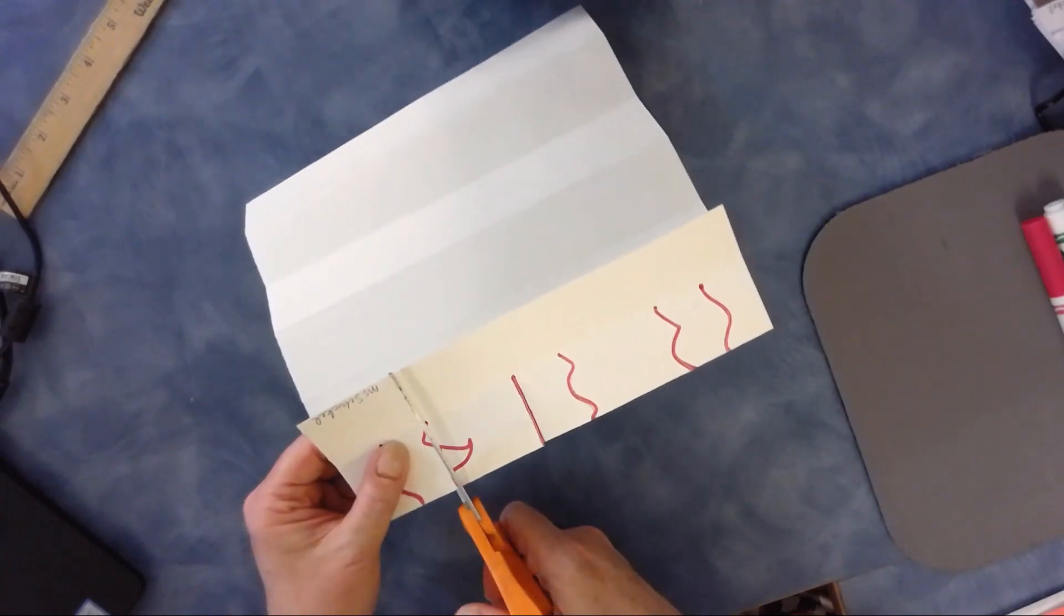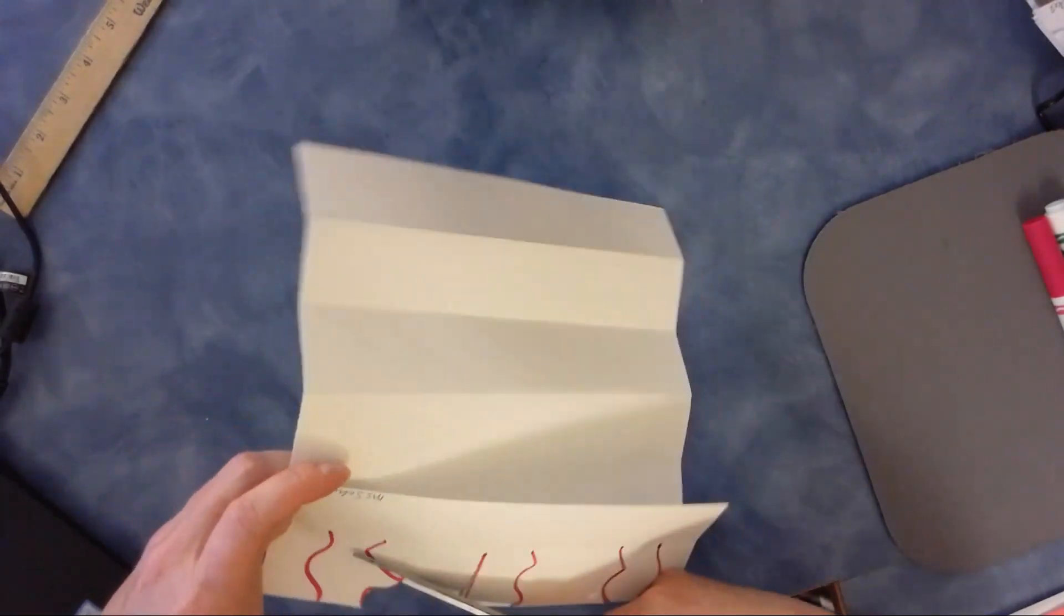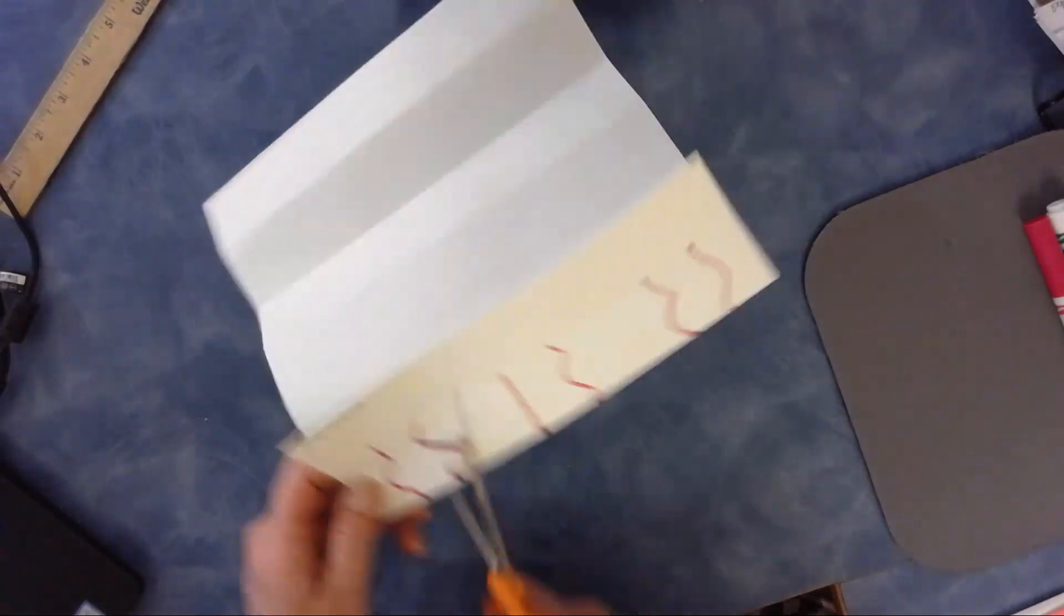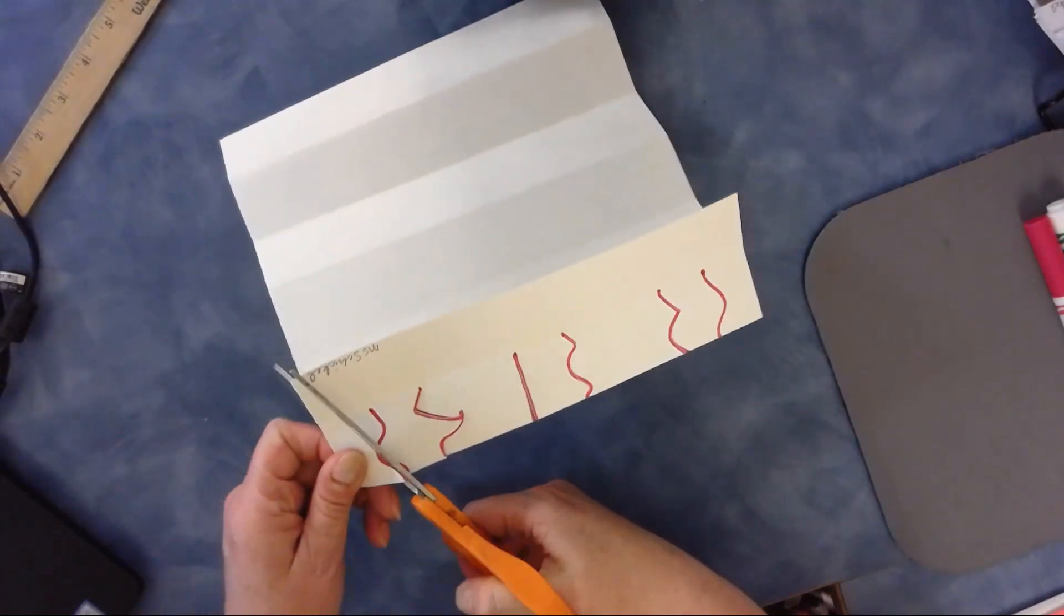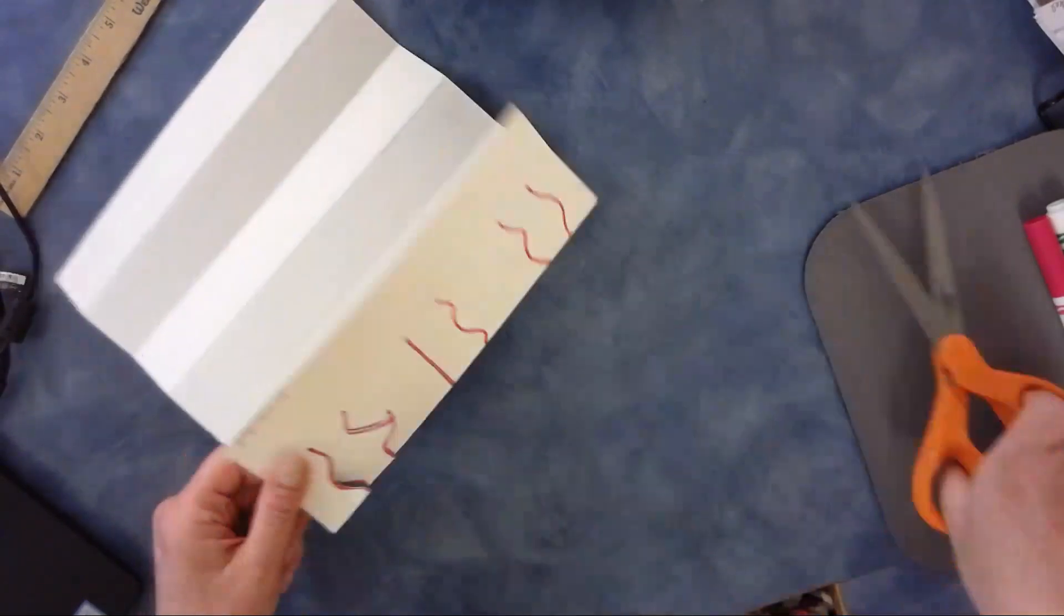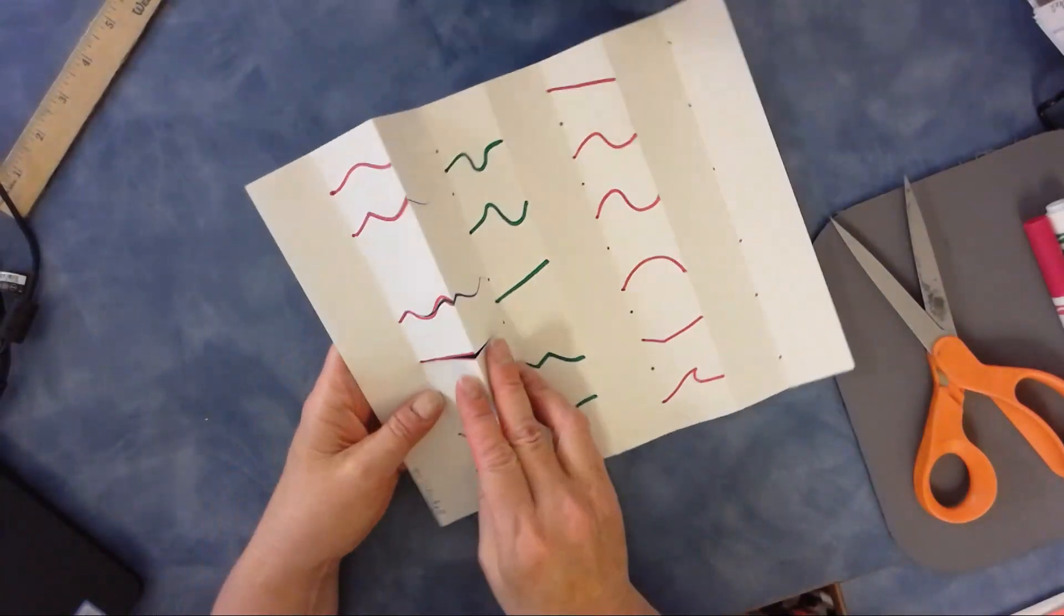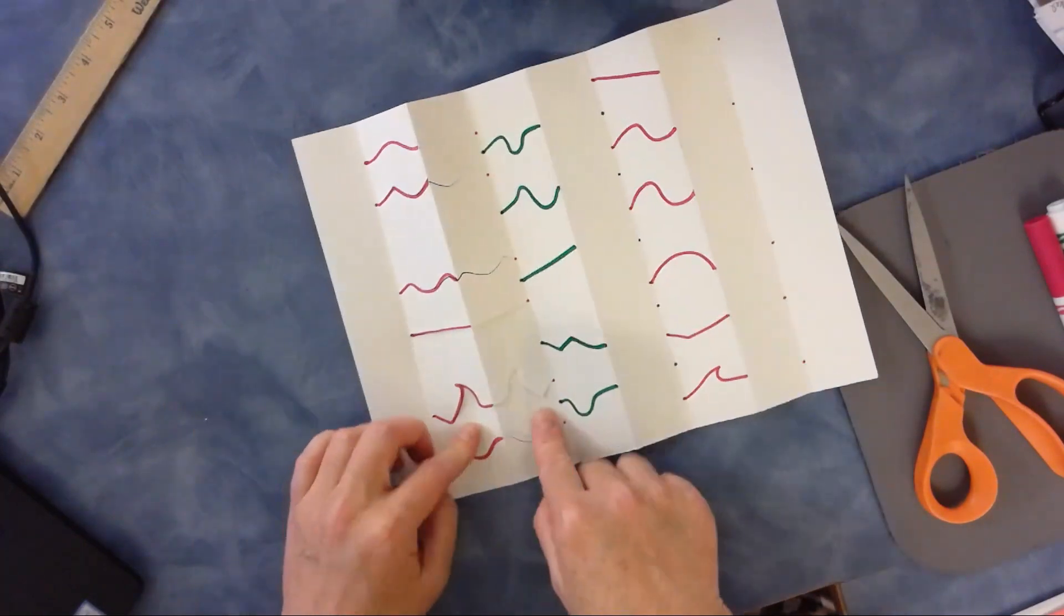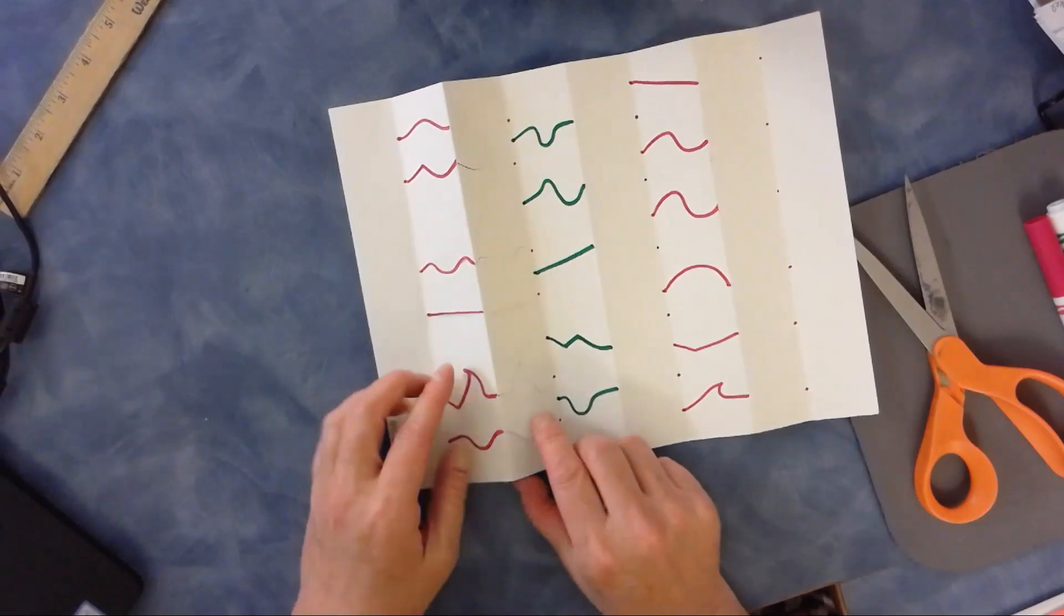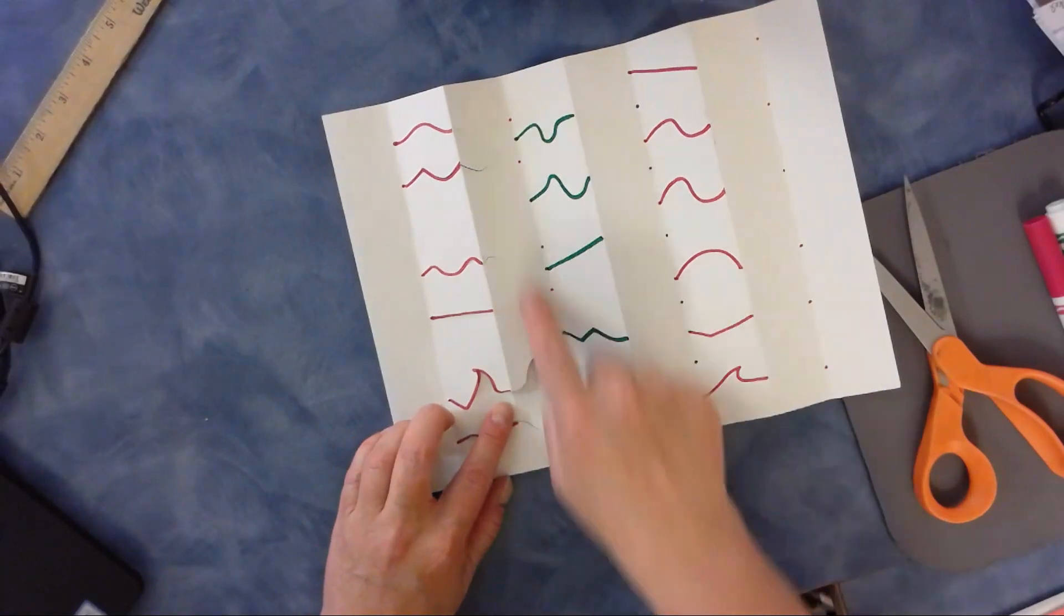Now when I open it up, the cuts go through vertical two and three. Vertical one doesn't have any cuts in it. My line is on vertical two and vertical three has a mirror image.